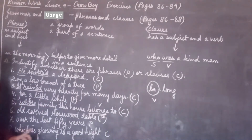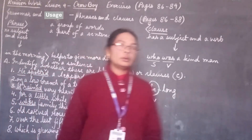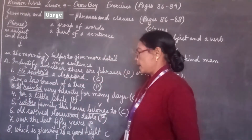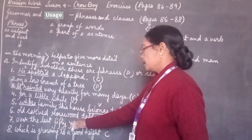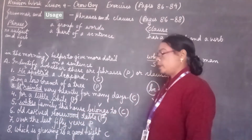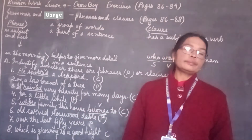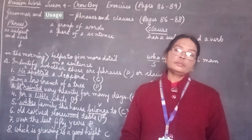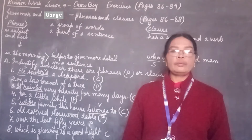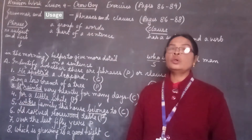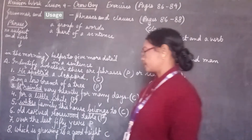Now number 7. The group of words we have is: 'over the last 50 years'. Here also we have no subject and no verb, so it belongs to our phrase.